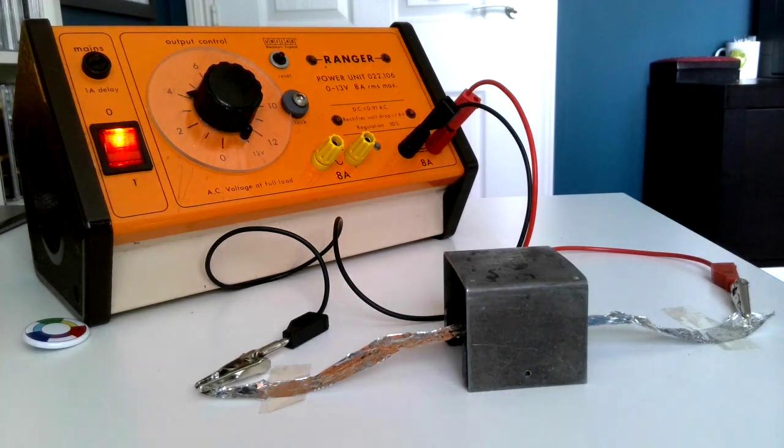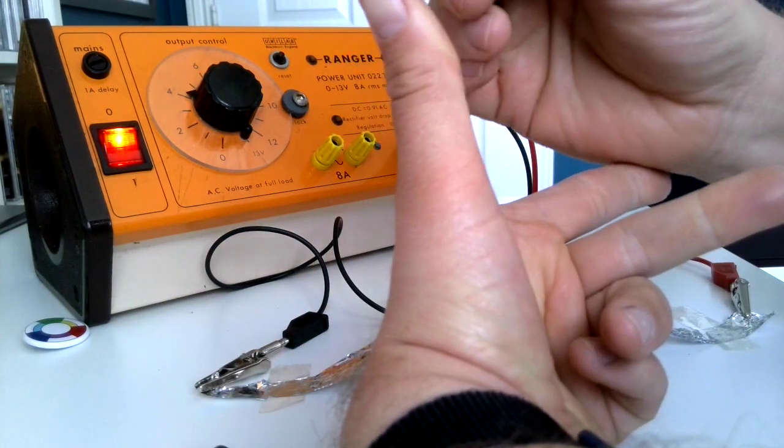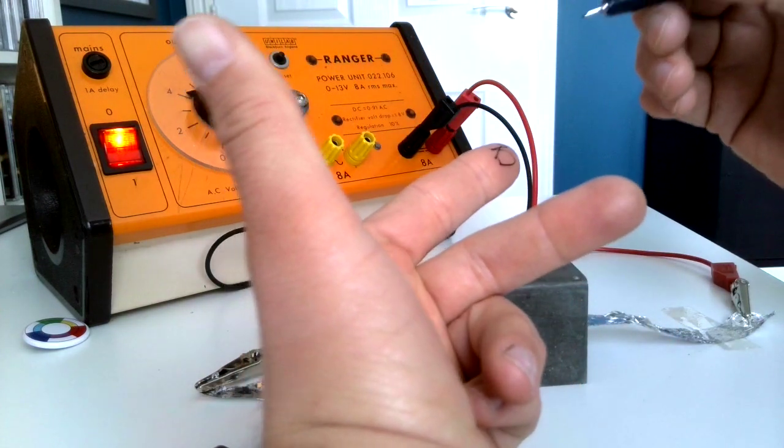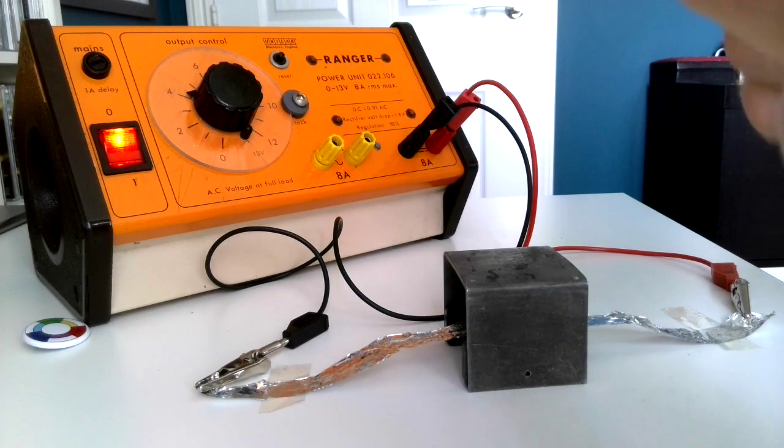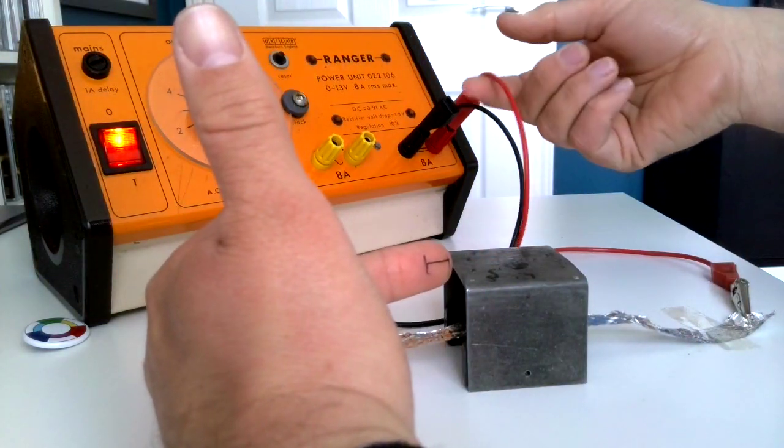So I've got F, B, and I. Now which direction is the current passing through this wire? Well, current goes from positive, which is usually denoted by red.